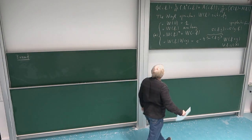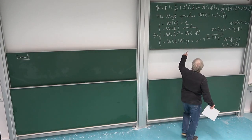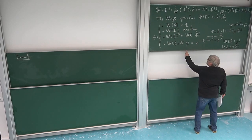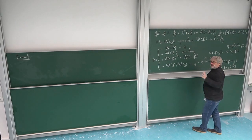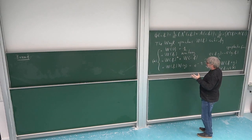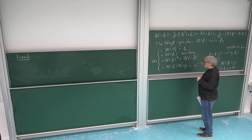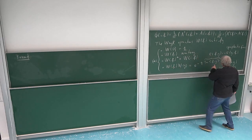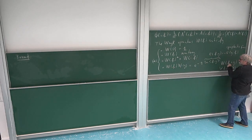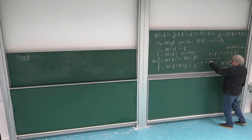First of all, one should notice that if I look on the algebra which is generated by them, it's enough to look on the linear span, because if I multiply two of those guys, I just get another one multiplied by some phase factor.